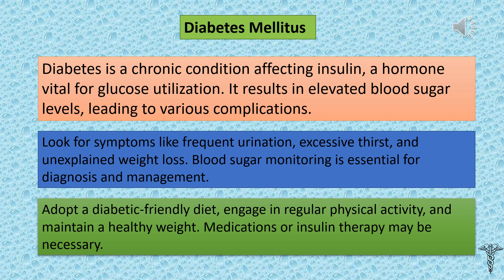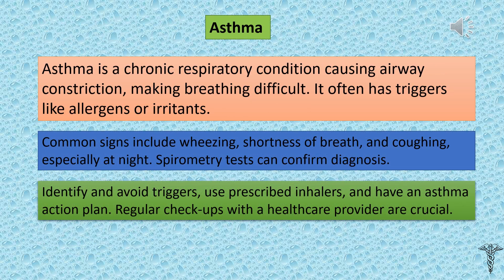Asthma is a chronic respiratory condition causing airway constriction, making breathing difficult. It often has triggers like allergens or irritants. Common signs include wheezing, shortness of breath, and coughing, especially at night. Spirometry tests can confirm diagnosis. For prevention, identify and avoid triggers, use prescribed inhalers, and have an asthma action plan. Regular checkups with a healthcare provider are crucial.